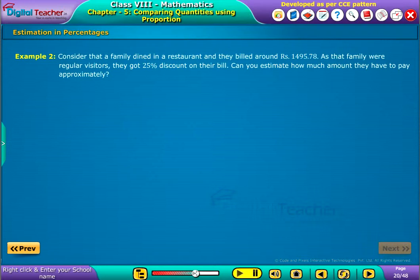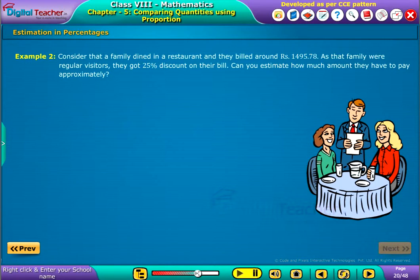A family dined in a restaurant and they billed around Rs. 1495.78. As that family were regular visitors, they got 25% discount on their bill. Can you estimate how much amount they have to pay approximately?